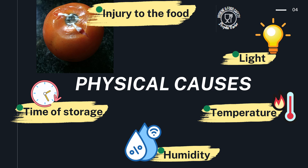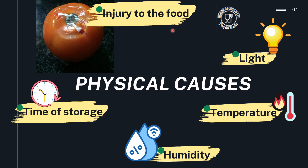Physical causes of spoilage include injury to the food — any kind of cut or break during harvesting, any damage that occurs. For example, there is a crack in the skin of a tomato which has aided the fungus to start growing. Any kind of damage to fruits or vegetables during harvesting, processing, or distribution — even any cut in meat or any other food — accelerates spoilage by microorganisms.